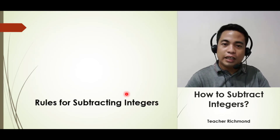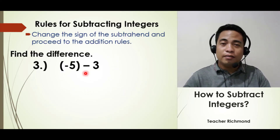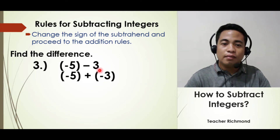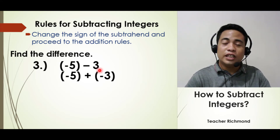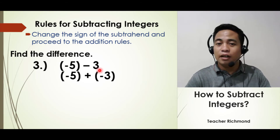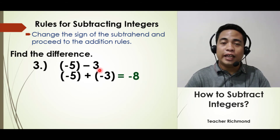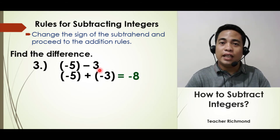Let's proceed to the third example: negative 5 minus positive 3. Simply change the sign of the subtrahend and proceed to addition. It becomes negative 5 plus negative 3. Since they have the same sign, just add their absolute values and copy the common sign. 5 plus 3 equals 8, and the common sign is negative. Therefore the answer for negative 5 minus positive 3 is negative 8.